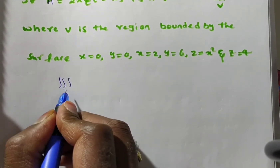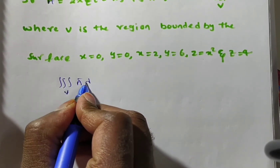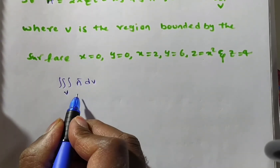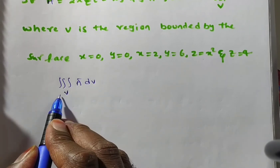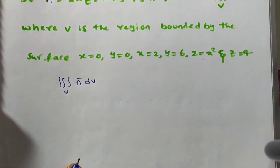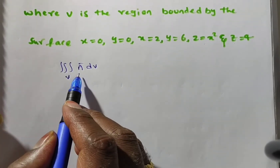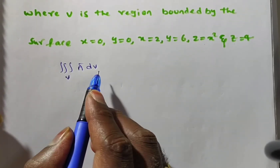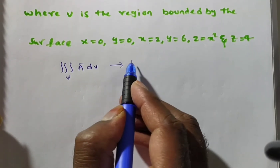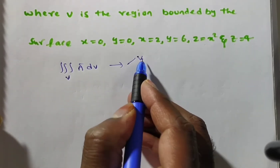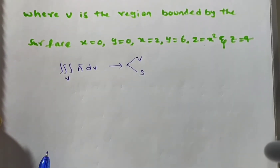Friends, what we have to evaluate is the triple integral of a-bar dv. They have given a-bar and the limits. So you can proceed directly. But observe: can you guess whether the answer will be a scalar or a vector?